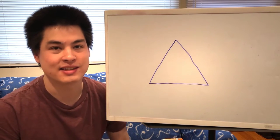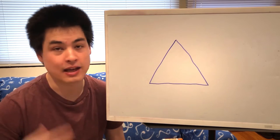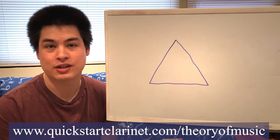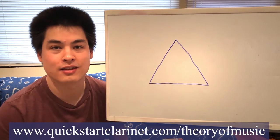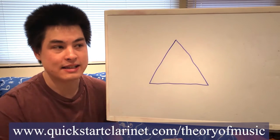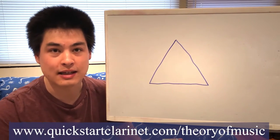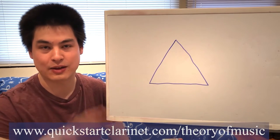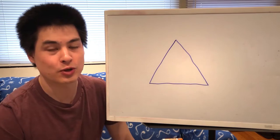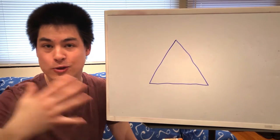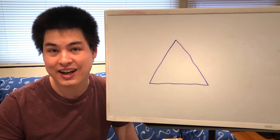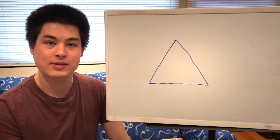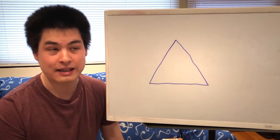One last thing before we get into it: I created a downloadable handout you might want to get before watching so you can take notes. Go to quickstartclarinet.com/theoryofmusic, or click the link in the description. You'll need to put in your email address, but you can always unsubscribe. This handout is super powerful and something you can put in your practice space to remind you what to practice. And if you aren't a clarinetist, this is still relevant — I made it about music in general, not just clarinet.